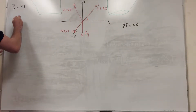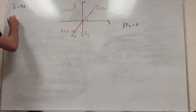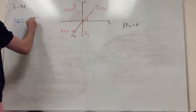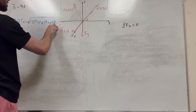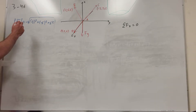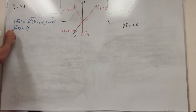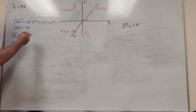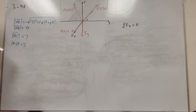So for B, the magnitude of AB is equal to the square root of negative three squared plus negative six squared plus six squared, which equals nine. The magnitude of AC is equal to seven. The magnitude of AD is equal to five — you can guess because it's just going straight out like that. So these are the important values we need to know.